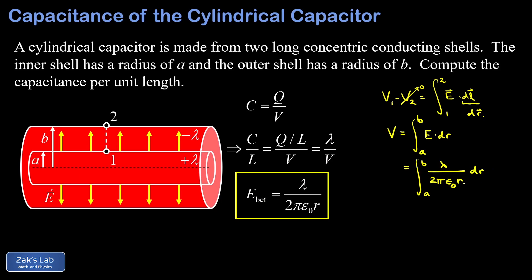Lambda over 2 pi epsilon-zero is a constant, so we factor it out in front of the integral. That leaves the integral of 1 over r, which is the natural log of r. Our potential difference is then lambda over 2 pi epsilon-zero times the natural log of r evaluated from a to b. Plugging in the limits gives us the natural log of b minus the natural log of a, which by log properties equals the natural log of b divided by a. So the potential difference is lambda over 2 pi epsilon-zero times the natural log of b over a.